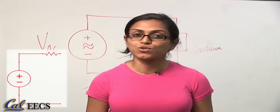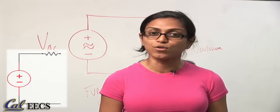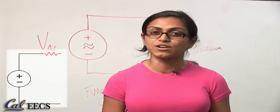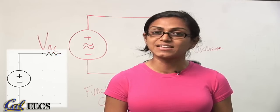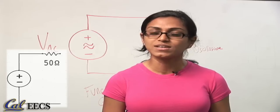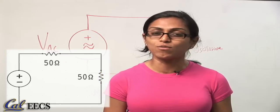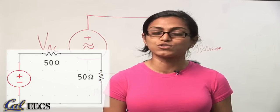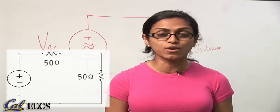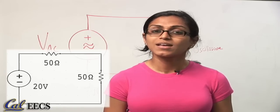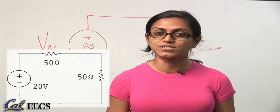Remember a real voltage source can be modeled as an ideal voltage source in series with an internal resistance. In this case the internal resistance is 50 ohms and since the load is 50 ohms as well, the ideal voltage source must be double the observed voltage or 20 volts. This is a nice example of voltage division.